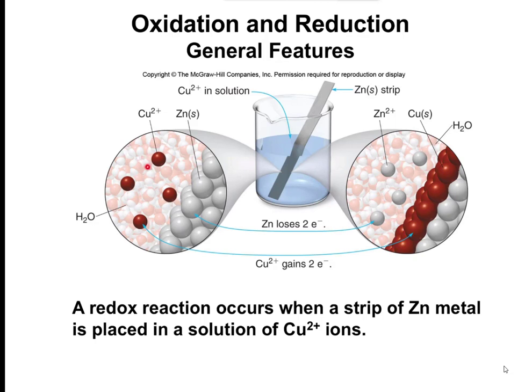So these are copper ions in a solution of water. Then you put in a zinc strip — just a piece of zinc metal — and you stir it. What happens is that you have solid zinc on one side, and Zn²⁺ on the other. The zinc becomes ionized, going from a solid to an ion that's basically soluble in solution.